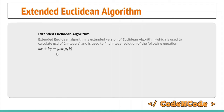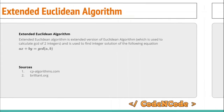So the Extended Euclidean Algorithm is used to calculate the solution of the equation ax + by = gcd(a, b). The sources for this lecture would be cpalgorithms.com and brilliant.org — links to both articles will be provided in the description of this video.